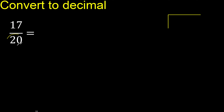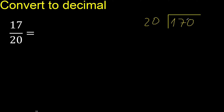17 divided by 20. 17 is less, therefore complete — always complete with 0. Here: 0 point.